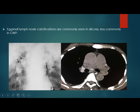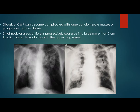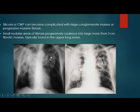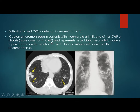Eggshell calcification is more commonly seen in silicosis rather than coal worker's pneumoconiosis. Both silicosis and coal worker's pneumoconiosis may cause progressive massive fibrosis — conglomerate masses — when small nodules coalesce and form a large mass more than 3 cm, mainly in the upper lung zones. This mass sometimes cavitates, showing a cavity with an air-fluid level. In such cases we should consider TB, because both coal worker's pneumoconiosis and silicosis increase the risk of TB and cancer. There is a very good correlation between silicosis and TB — this is called silicotuberculosis.